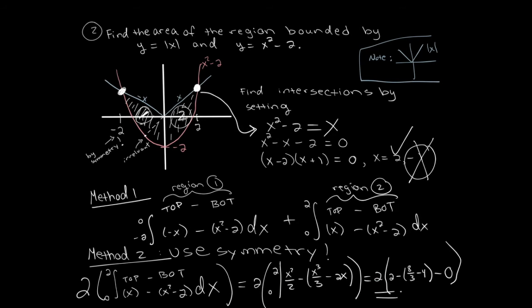Taking the antiderivative, plugging in 2 and 0, and multiplying by 2 due to symmetry, the final answer is 20 over 3 — a positive number, which makes sense for an area.